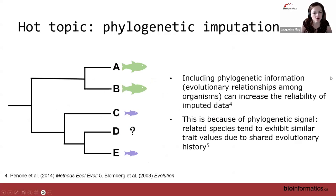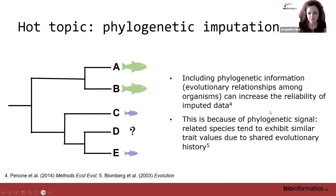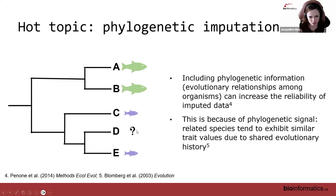A very hot topic in the literature is phylogenetic imputation. This centers around the concept of phylogenetic signal — including phylogenetic information or evolutionary relationships among organisms can increase the reliability of imputed data and boost accuracy. This is because of phylogenetic signal: the tendency for related species to exhibit similar trait values due to a shared evolutionary history. If you look at a phylogenetic tree, you'd probably guess that species D looks like its relatives. Resources for phylogenetic imputation are included in the script.